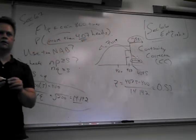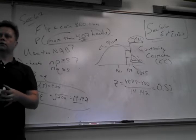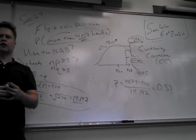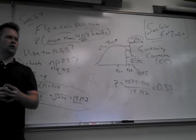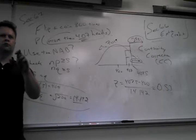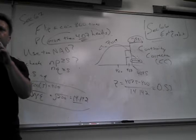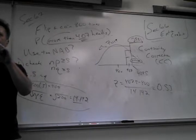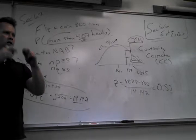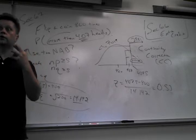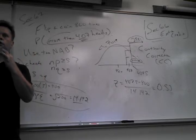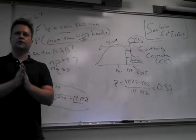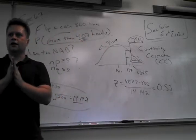Is 407 heads an unusually high number? No — there's almost a 30% chance of it happening. We compare against the 5% threshold. For those doing homework, you know 5% is the cutoff for 'unusual.'